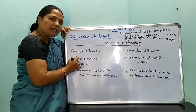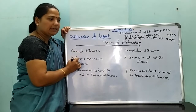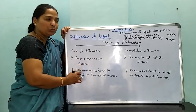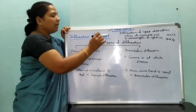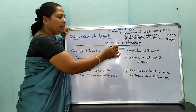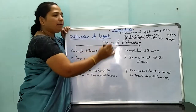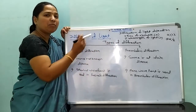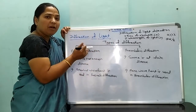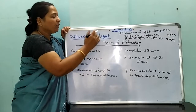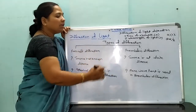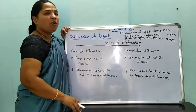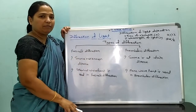To summarize: in Fresnel diffraction, the source is at a finite distance and a spherical wavefront is used. In Fraunhofer diffraction, the source is at infinite distance from the screen or diffracting system, and a plane wavefront is used.